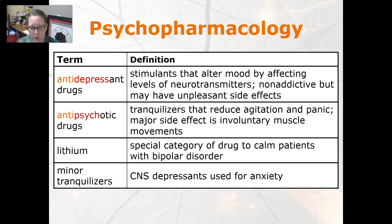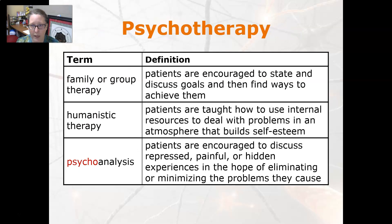Minor tranquilizers are central nervous system depressants used for anxiety. In family or group therapy, patients are encouraged to state and discuss their goals and find ways to achieve them. In humanistic therapy, patients are taught how to use internal resources to deal with problems in an atmosphere that builds self-esteem.